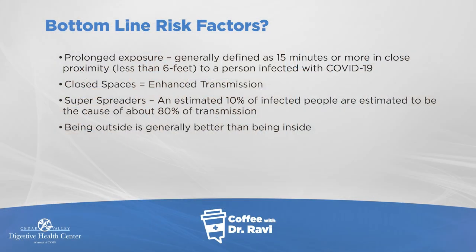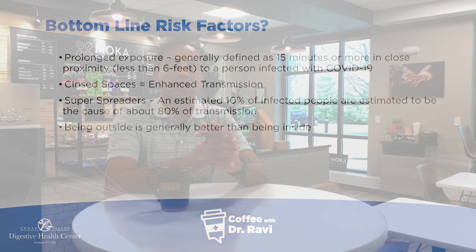Lastly, there is the concept of super spreader events, where a small percentage of infected individuals are transmitting to a larger percentage. In some groups, 10% of infected patients are spreading it to 80% of the people around them. In general, trying to avoid super spreader events such as closed concerts, bars, and closed sports events — where people are generating a lot of droplets — is key. These are the risk factors, and understanding them can help lower our own risk.